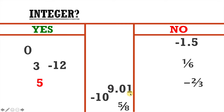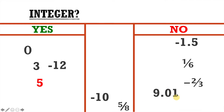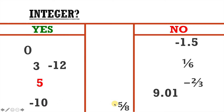How about 9.01, which is properly read as nine and one hundredth? Absolutely not — it has a decimal place value in it, therefore it's not an integer. How about negative 10? Absolutely — it has a negative and it's a whole number, therefore it's an integer. And how about 5 eighths? Absolutely not — 5 eighths is a fraction and therefore cannot be an integer.